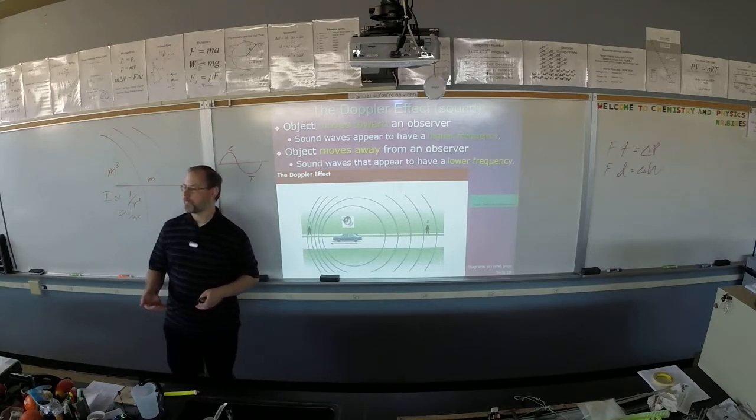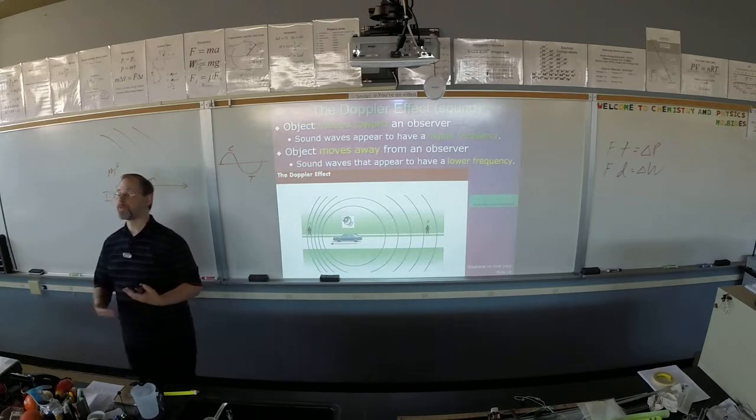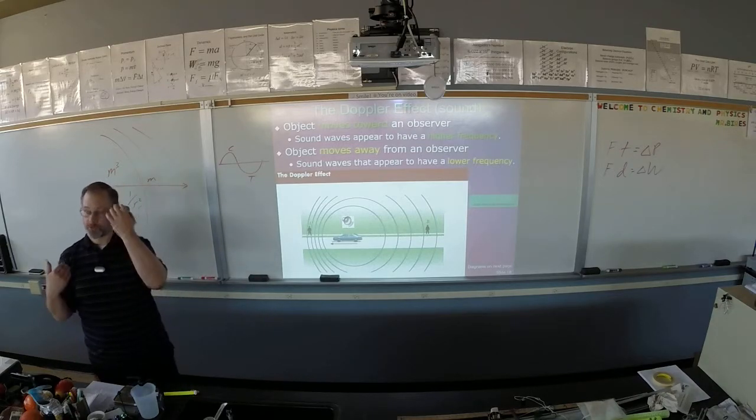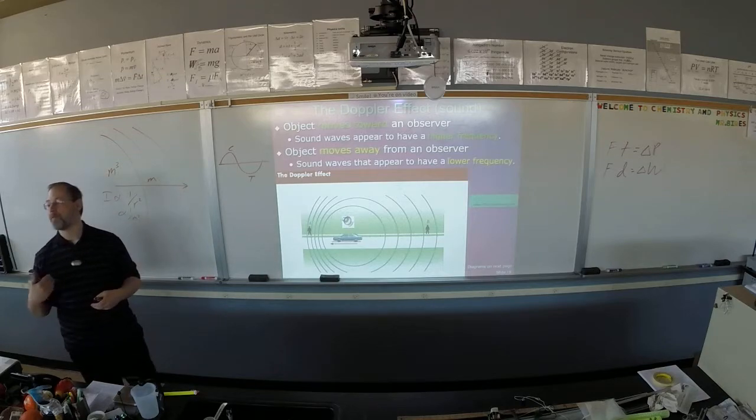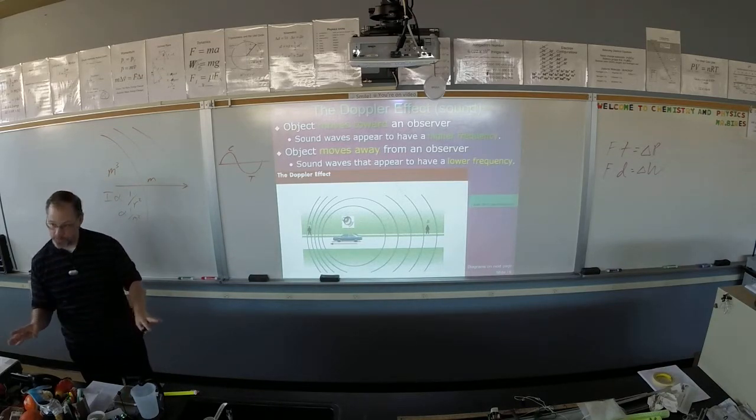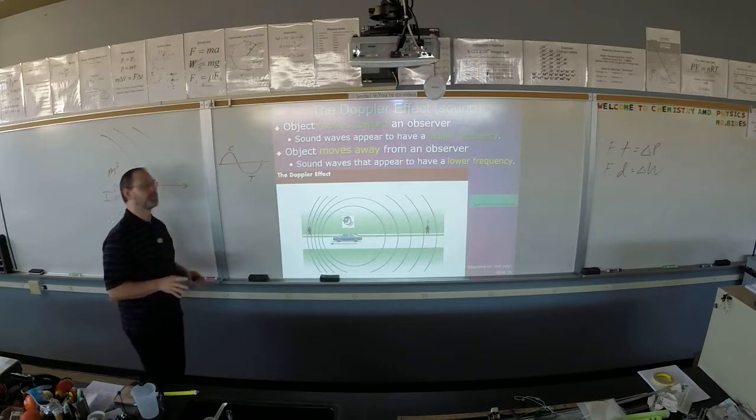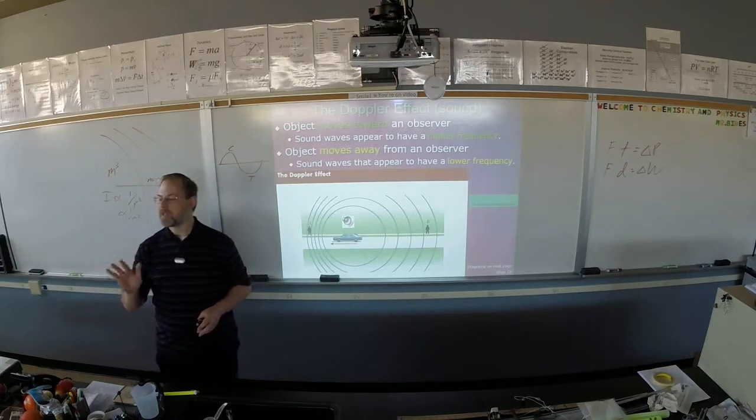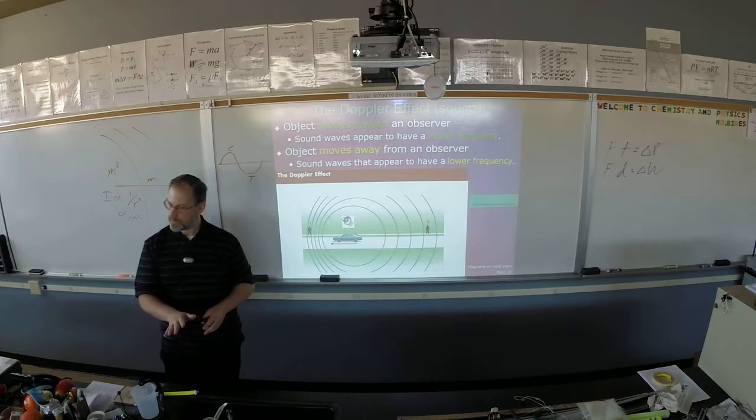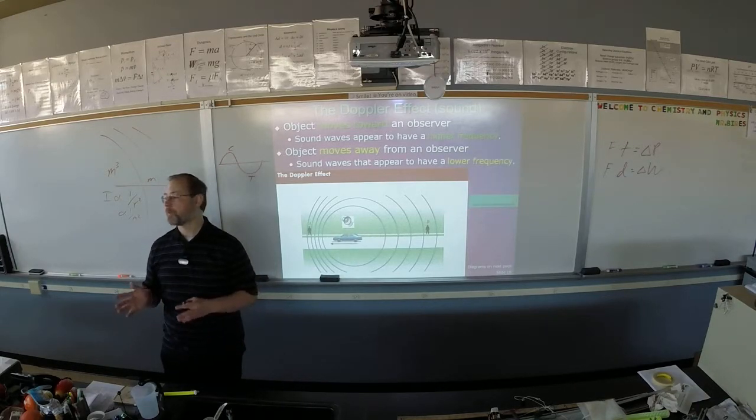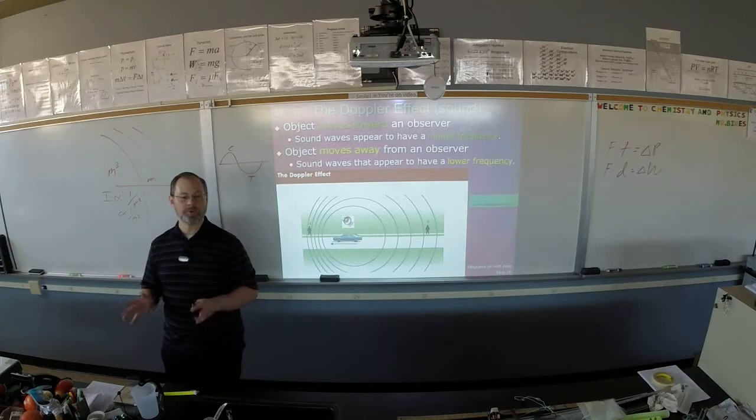As something is moving towards you, this could be the source moving towards you or it could be you moving towards the source. It could be moving away from the source or moving away. There is some math involved that you do not have to do. Doppler effect is one more thing that the AP needs you to know but doesn't have you calculate. They need you to know what the Doppler effect is but they don't have you do any math with it.